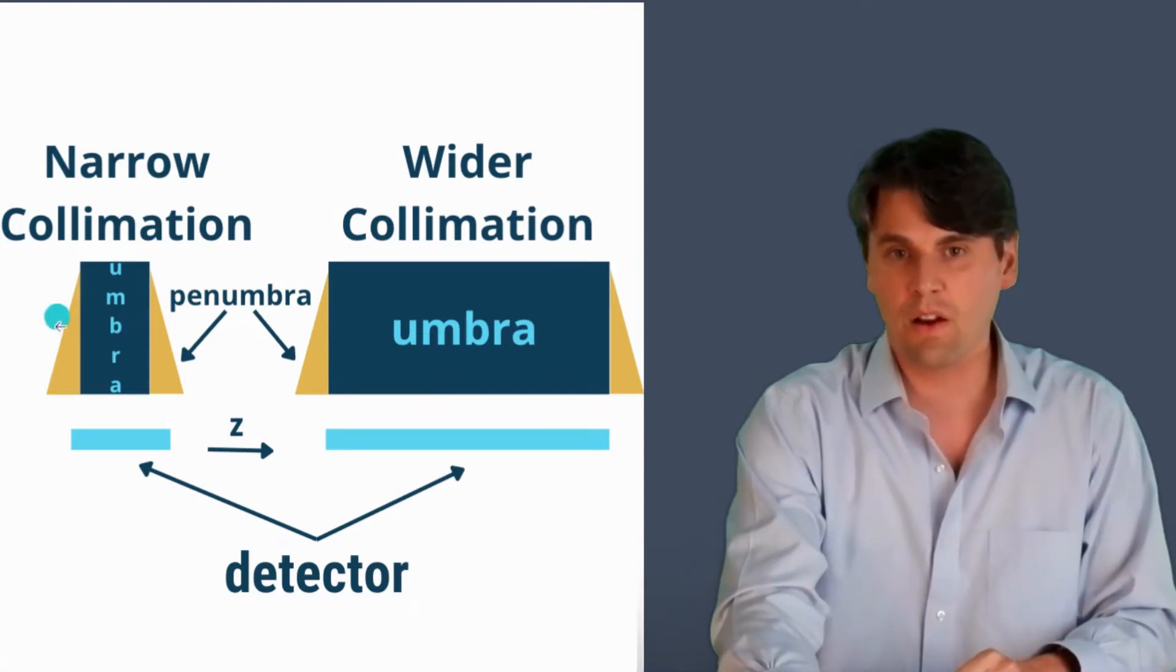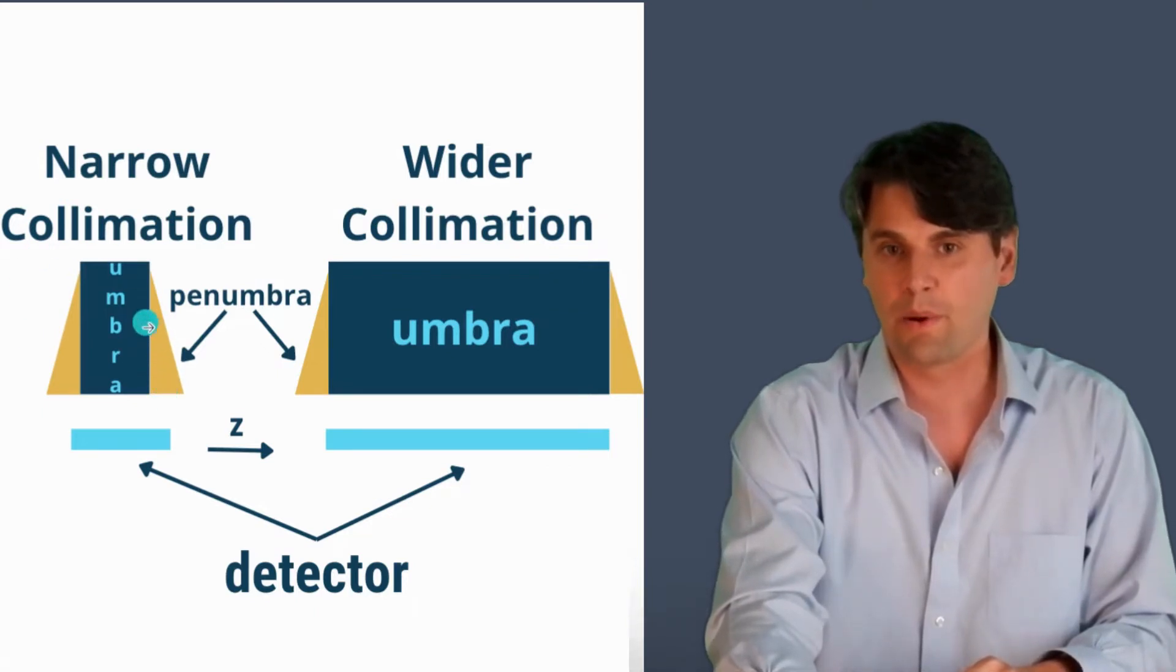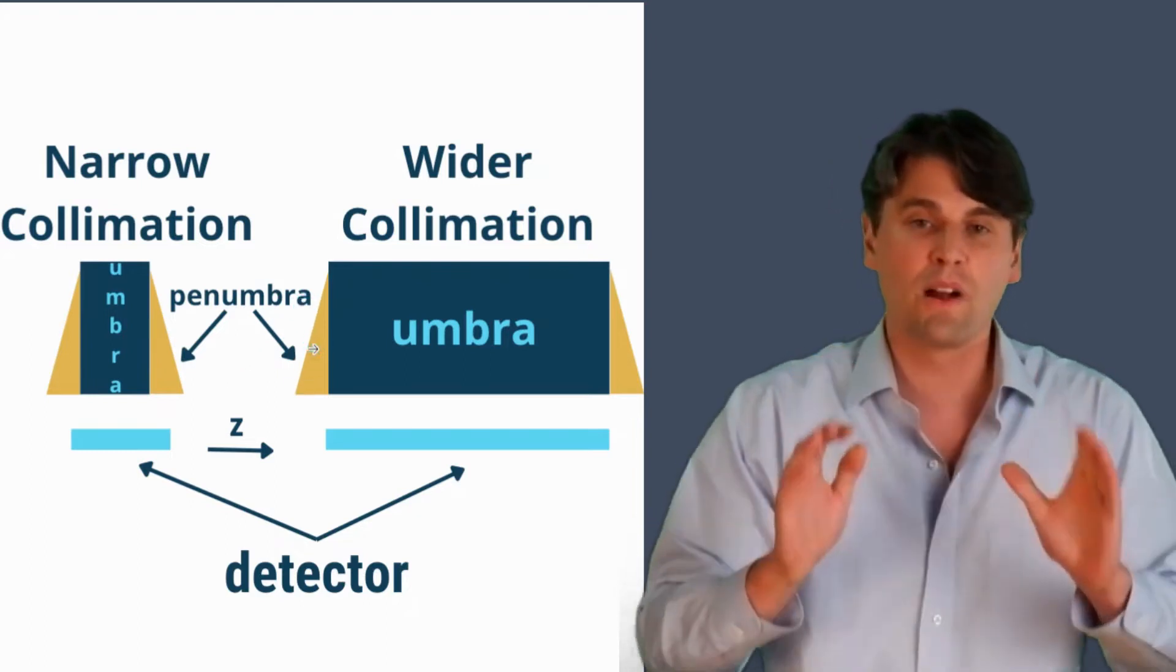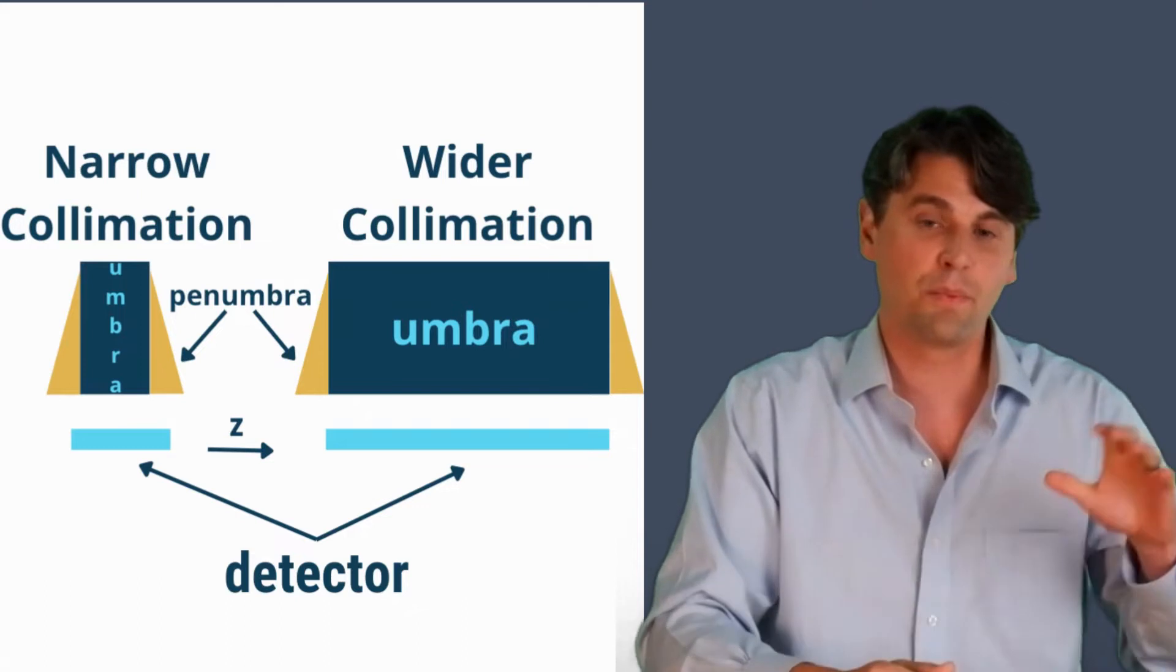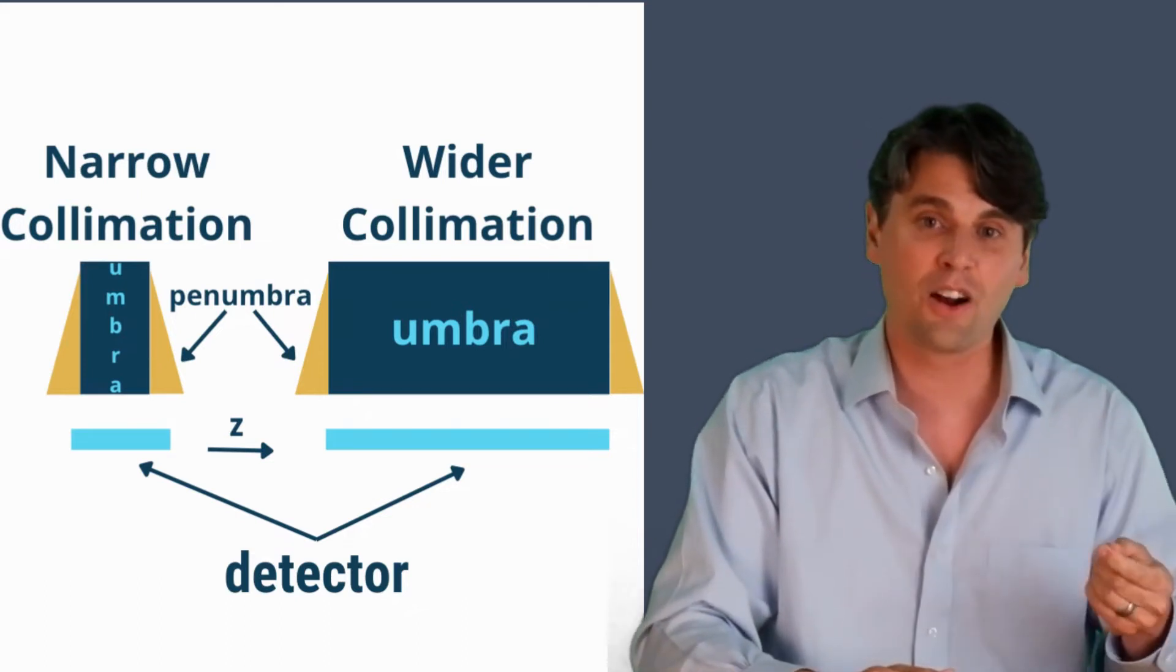So that extra penumbra, if you look at it on the narrow collimation case, you can see there's a penumbra here. And on the wide collimation case there's also the penumbra. And the relative fraction that's penumbra compared with the umbra is actually higher in the narrow collimation case.